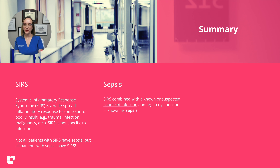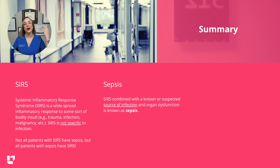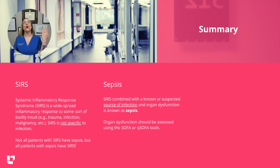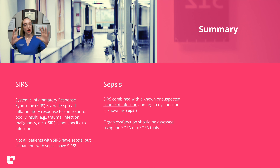Then we have sepsis. Sepsis is SIRS combined with a known or suspected source of infection and organ dysfunction. If we know or suspect a source of infection and we are showing signs of organ dysfunction, we are now calling this sepsis. We should assess organ dysfunction with SOFA or qSOFA tools. qSOFA is what we use for quick triage — the rapid assessment — and SOFA is the more in-depth tool that gives us a very detailed clinical picture of organ dysfunction.